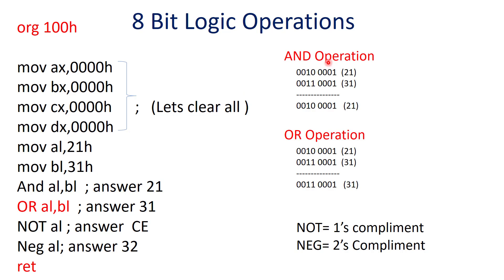The AND operation is nothing but a multiplication kind of thing. When you take the binary form of the hexadecimal numbers, 21H will be 0010 0001 and similarly 31H as well. When you multiply bit by bit, you end up with 0010 0001, which gives you 21 as your result. That means when you do the AND operation of AL and BL, you are going to see your AL register with the value 21.